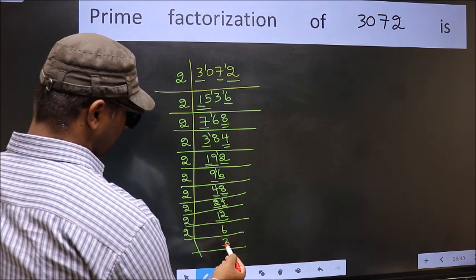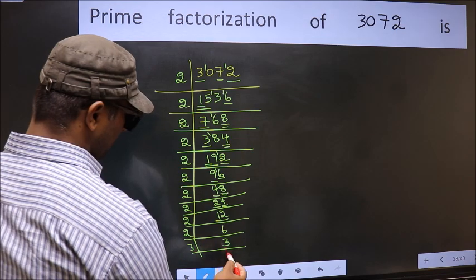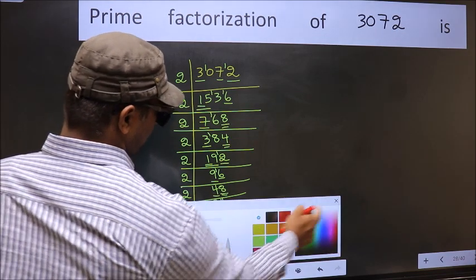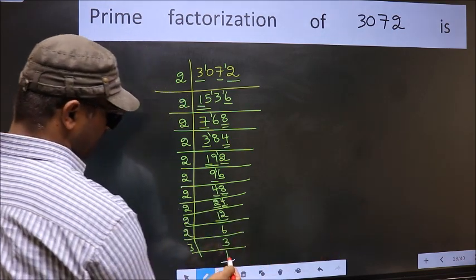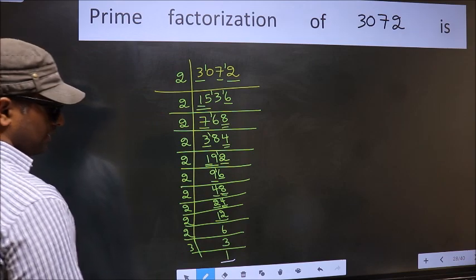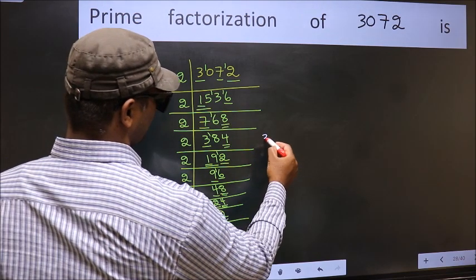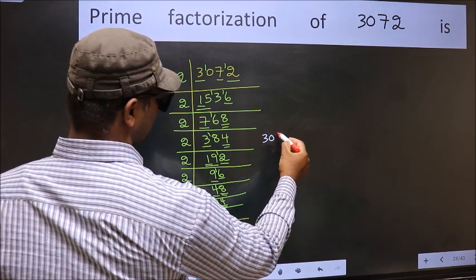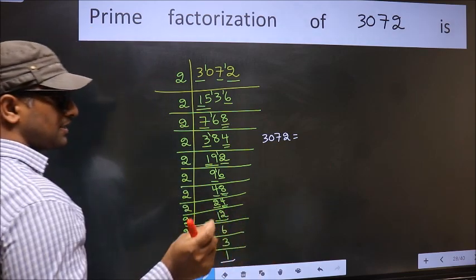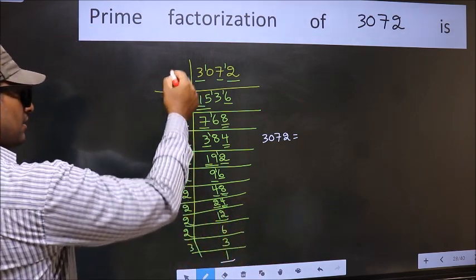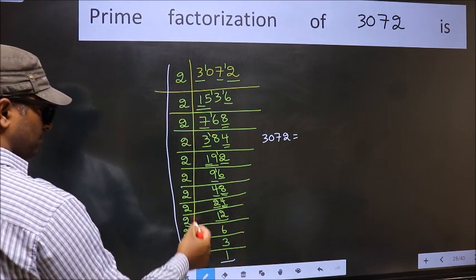Now we have 3. 3 is a prime number, so 3 times 1 is 3. So we got 1 here. So the prime factorization of 3072 is the product of these numbers.